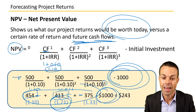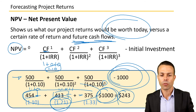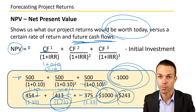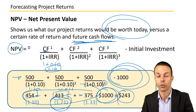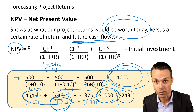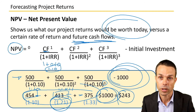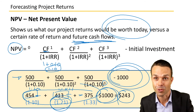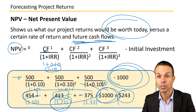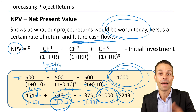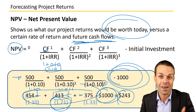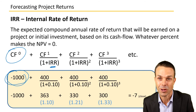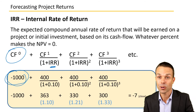After adding the discounted cash flows together and subtracting the initial $1,000 investment, we get $243. In the real world this could be $243,000 or $243 million depending on project scale. Any positive return is what we're looking for, and the higher the better — which brings us to Internal Rate of Return.